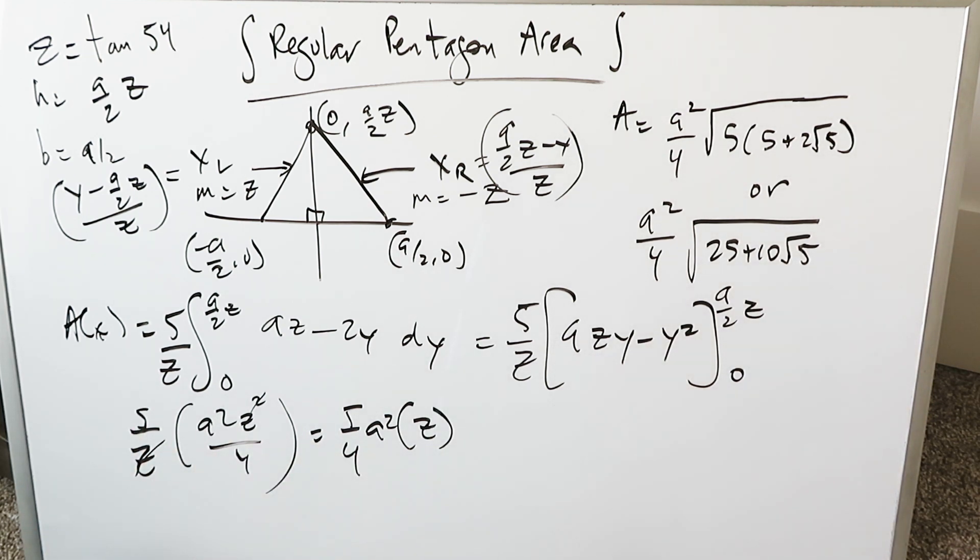That's exactly what I have. This right here is the end result of my derivation, the area formula for regular pentagon. All I have to do is we substitute the Z and my answer here is 5 over 4 A square tan 54.